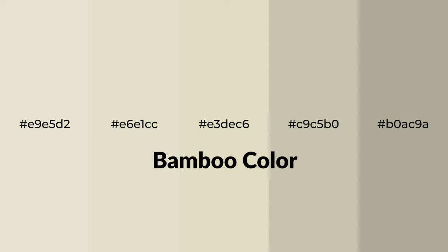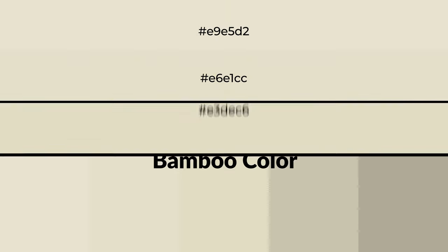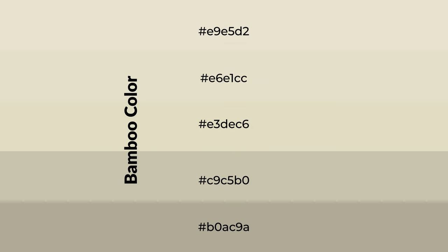Warm shades of bamboo color with green hue for your next project. To generate tints of a color, we add white to the color. Tints create light and exquisite emotions. To generate shades of a color, we add black to the color.